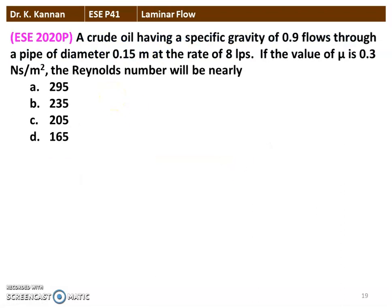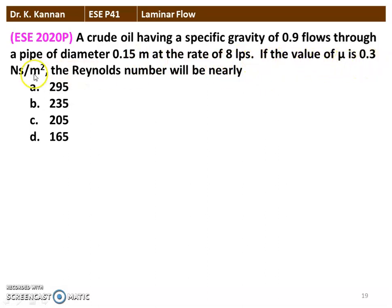The next question from the 2020 question paper: A crude oil having a specific gravity of 0.9 flows through a pipe of diameter 0.15 meter at a rate of 8 liters per second. If the dynamic viscosity μ = 0.3 N·s/m², the Reynolds number will be nearly — we need to calculate the Reynolds number.